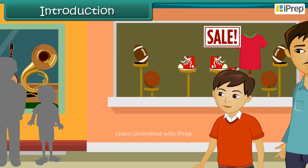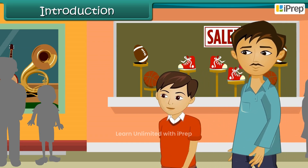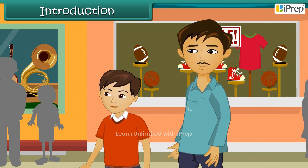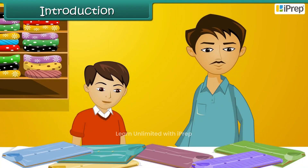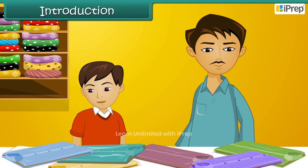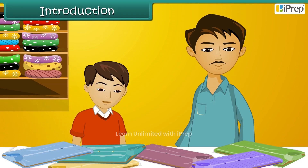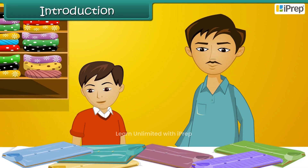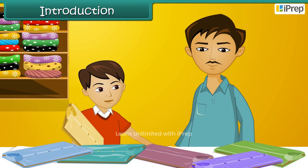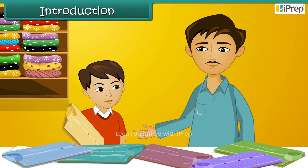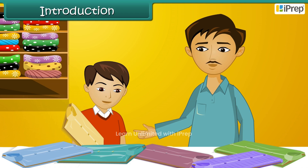Arjun and his father are out shopping for summer clothes. They are both looking for clothes that are cool, comfortable, lightweight and maintenance-free. Arjun picks up a cotton shirt, but his father decides against it as it is heavy and gets crushed easily.